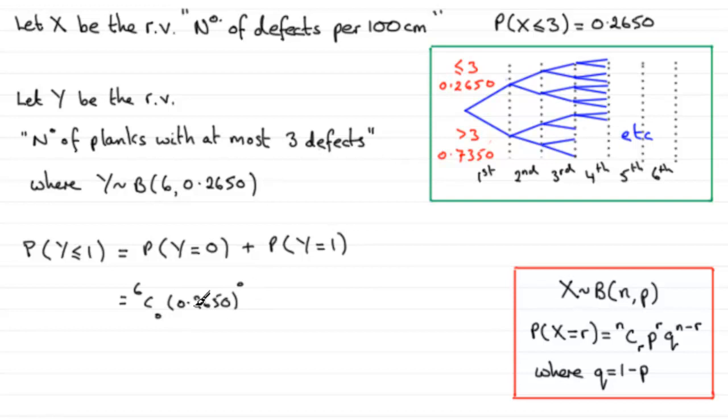And then you've got failure, which is 1 minus p, which we said here was 0.7350. I'm just going to put it as 0.735 just to save a bit of space, and that's to the power of 6. So that's the probability that Y equals 0.